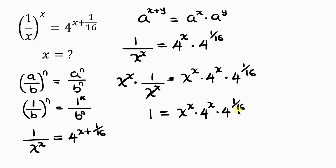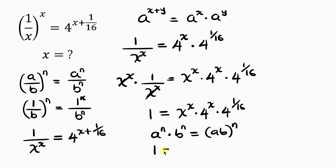On the right hand side, x^x and 4^x share a common power of x. We apply the law a^n · b^n = (a·b)^n — multiply the bases and group them with the common power. So x^x times 4^x becomes (4x)^x, giving us 1 equal to (4x)^x times 4^1 all over 16.